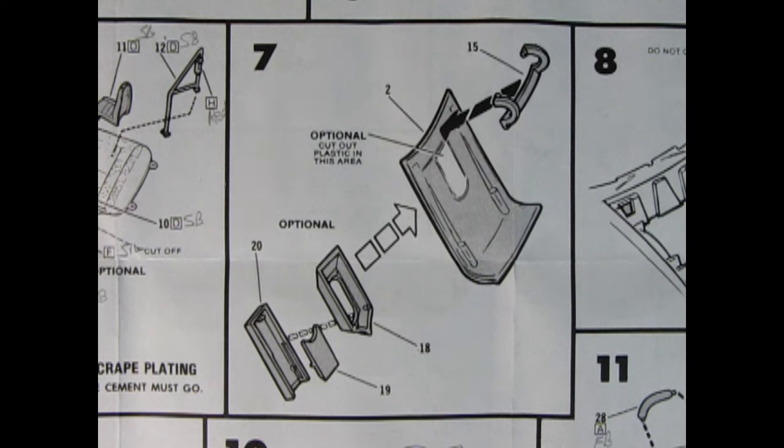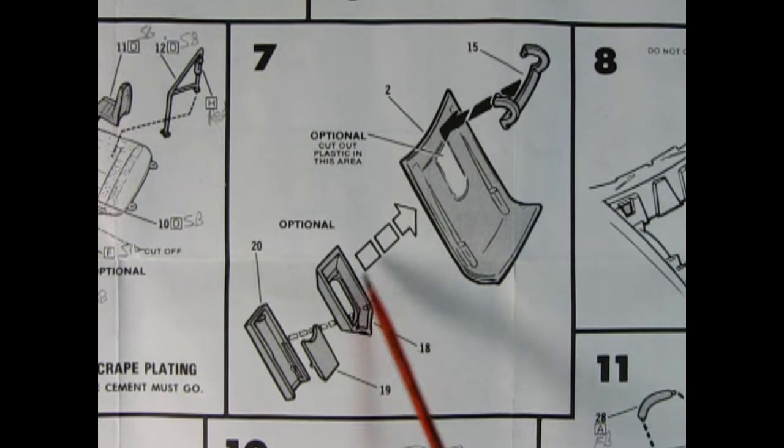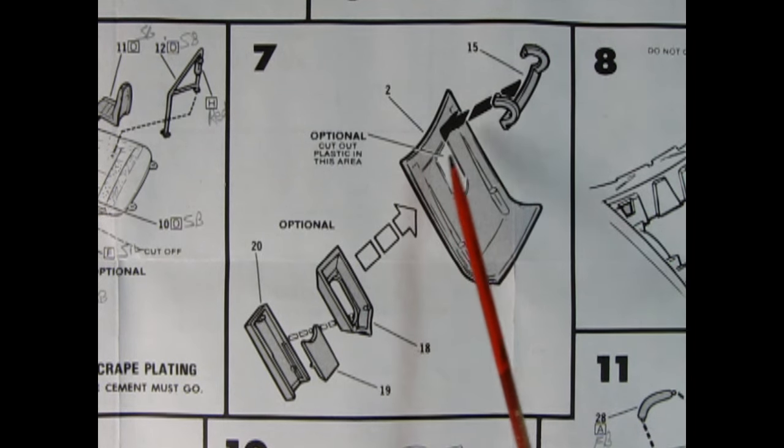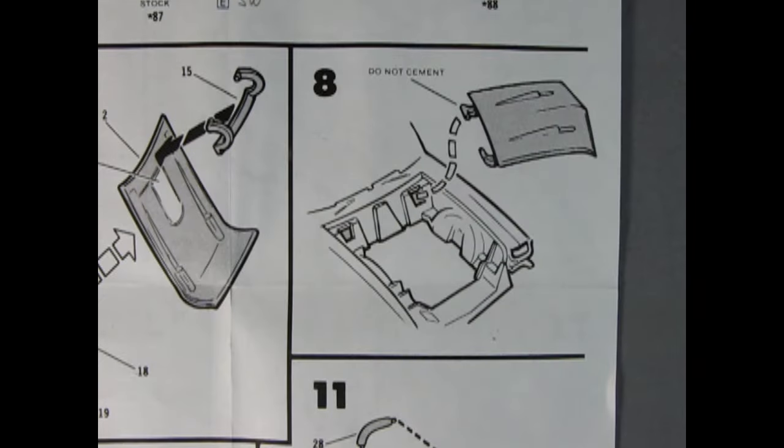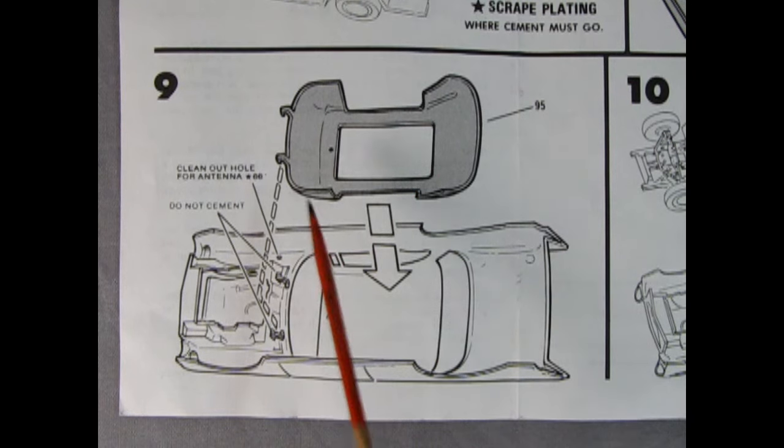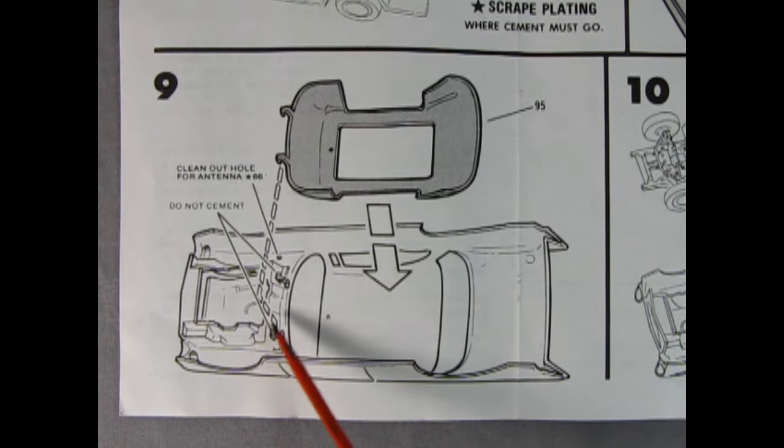Now panel seven is a little bit optional. So the optional part is cutting out this blank in the hood. And that would be so you could put on this three-piece hood scoop. But if you don't want to do that and you want it stock, you just glue the hinge on instead. Panel eight shows the stock version of the hood being hooked into the body. Panel nine shows the roof glass being hooked in. There's a couple little hooks on the front of the windshield. Those will hold in the hood hinges.